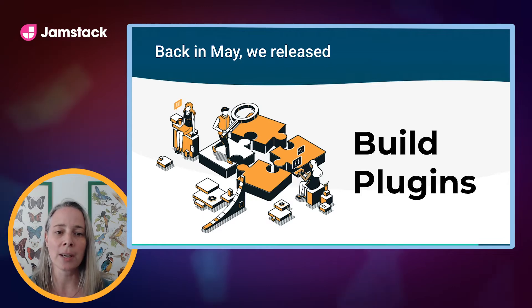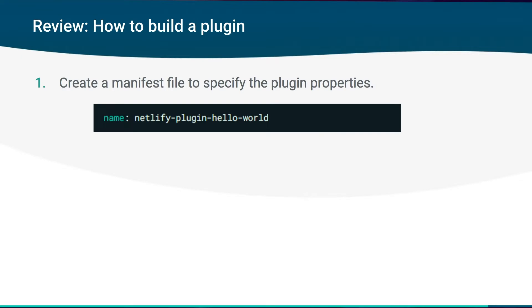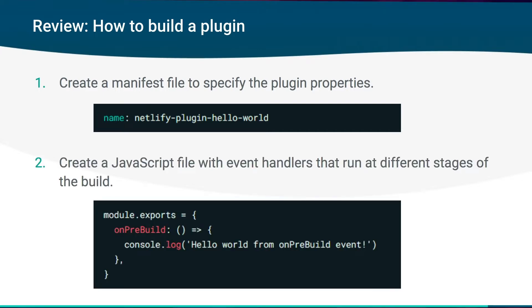To review a little bit, I'm going to talk about what it takes to build a build plugin. The first thing you need to do is create a manifest file that specifies the plugin's properties. At a minimum, this is a name so that you can refer to the plugin. The other file is a JavaScript file with event handlers that run at different stages of the build, plugging into sections of the build as it runs. You can stick this in a repository, refer to it in your Netlify.toml config file, and it will run in your local builds as well as on Netlify's build system.